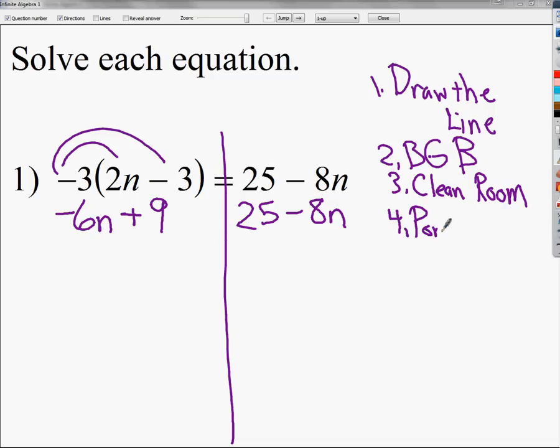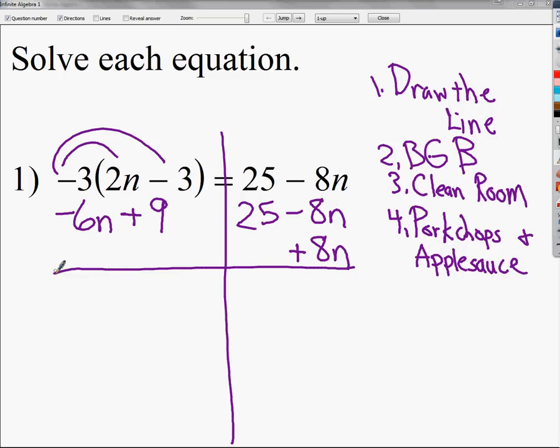Then, we're going to do Pork Chops and Applesauce. We talked about that in the last video. It's where I'm going to bring over one. I'm actually going to eliminate one of the variable terms on one side, and then you have to do the same thing to both sides of the equation. So let's get rid of that minus 8n. In order to get rid of minus 8n, I'm going to add 8n. If I do it over on the right side, I need to do it on the left side as well. On the right side, I can mark those two out, bring down anything that I didn't use. On the left side, I do negative 6 plus 8, which gives me 2n and bring down plus 9.